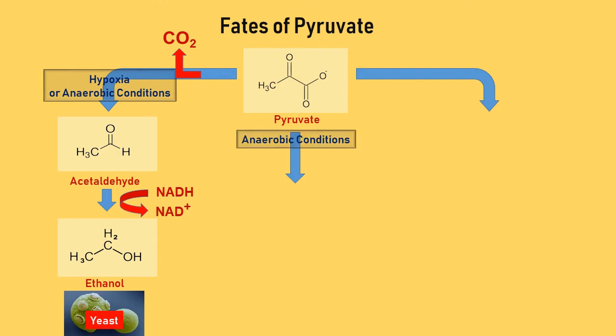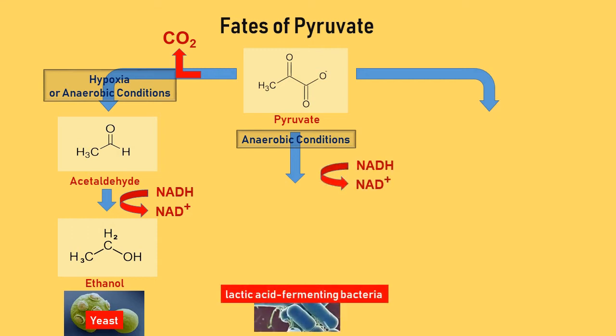Secondly, in anaerobic conditions, Lactobacillus can reduce pyruvate into lactate by accepting protons from reduced NADH. This is called lactic acid fermentation.